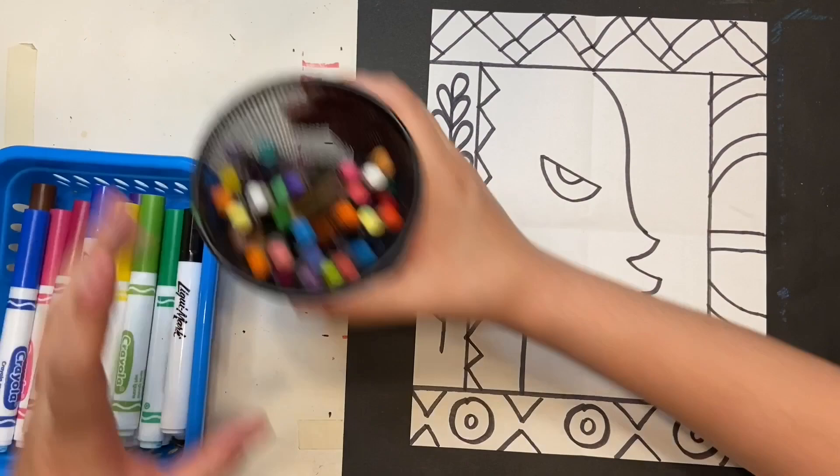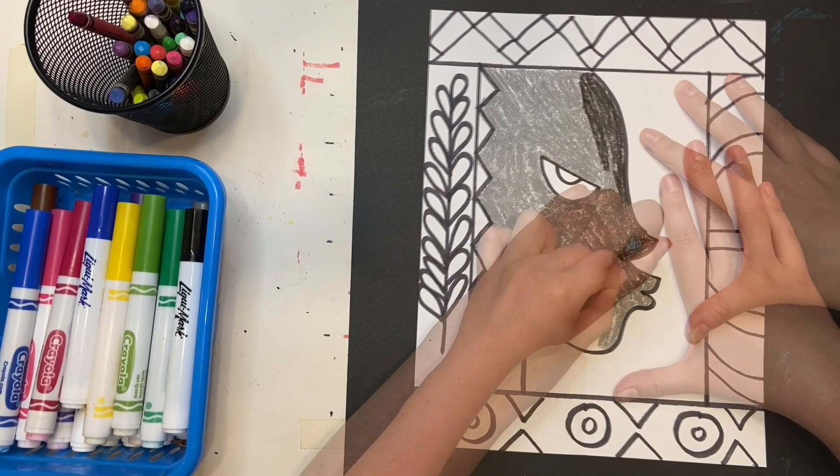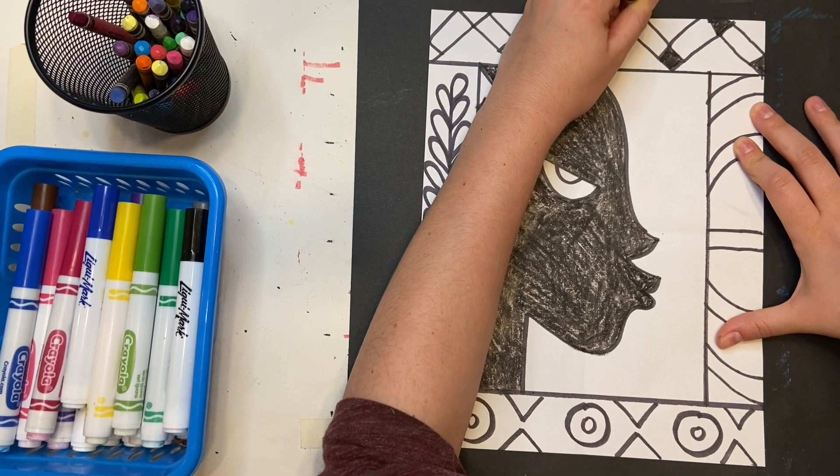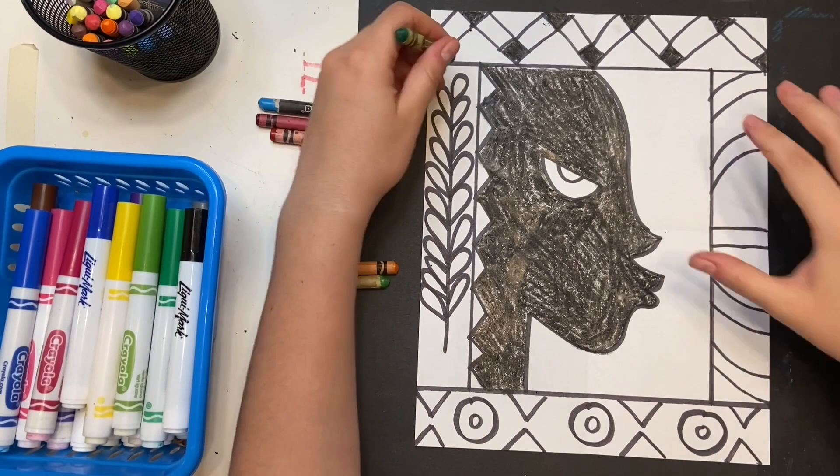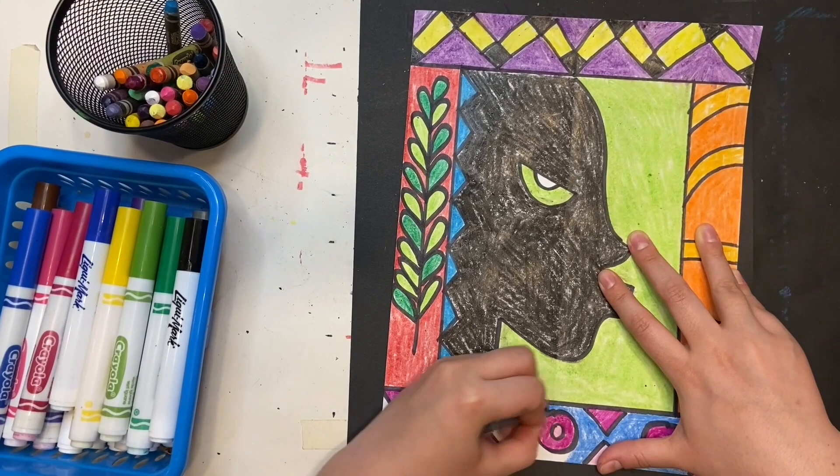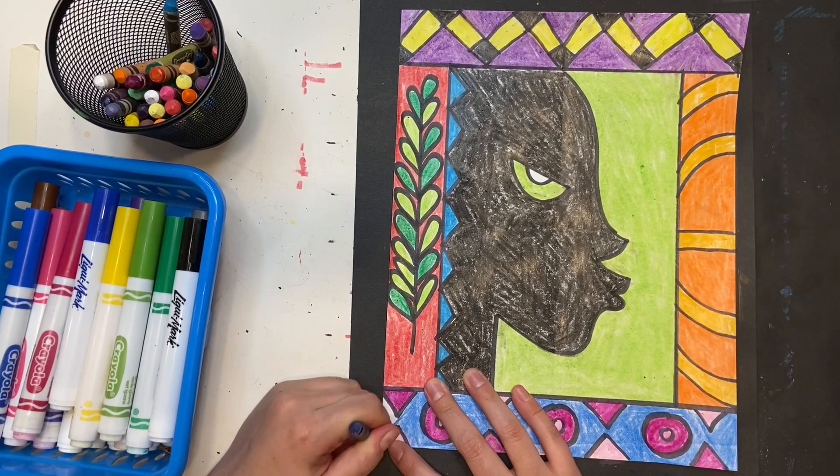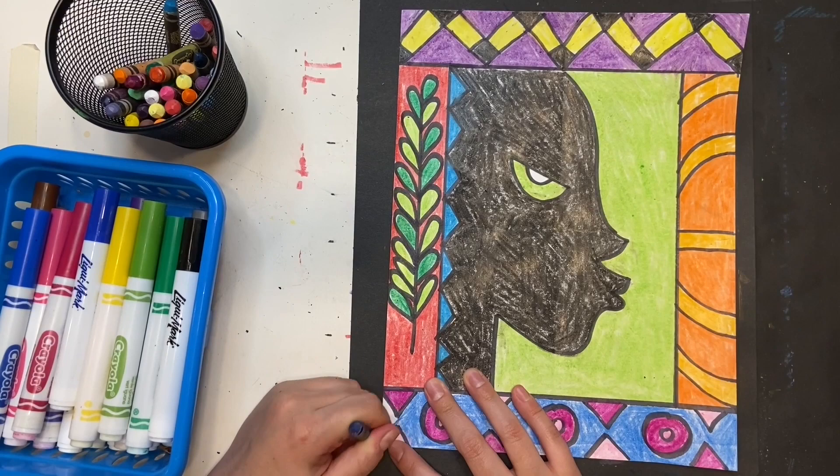Now it's time to color. Your art is not complete unless the entire paper is colored in. I'm using black for the face because it's a silhouette. I'm gonna continue to use markers and crayons to color in my entire paper. It should look something like this when you're all finished. There should be no white. Take your time and do your very best work. Lois Mailou Jones would be so proud.